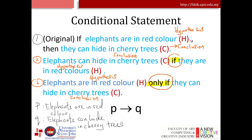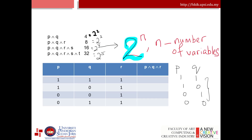P is 'elephants are in red' and Q is 'elephants can hide in cherry trees.' You can have the hypothesis first followed by the conclusion, or the conclusion first followed by the hypothesis, or you can use only-if. These are the three conditions: original if-then, reversed, and using only-if.